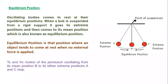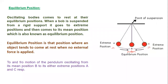The next article is equilibrium position. Looking at the diagram, the position of the bob at point B is the equilibrium position, also called the mean position. Points A and C are the extreme positions of the bob of the simple pendulum. Oscillating bodies come to rest at their equilibrium position. When the bob is suspended from a rigid support, it goes to the extreme position and then returns to the mean position, which is the equilibrium position.